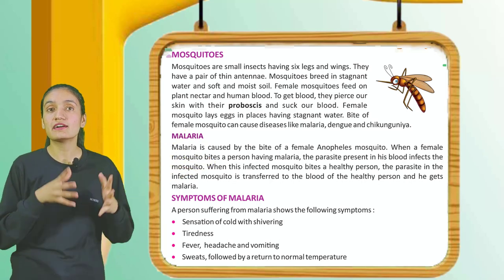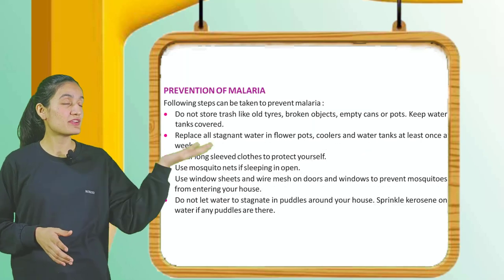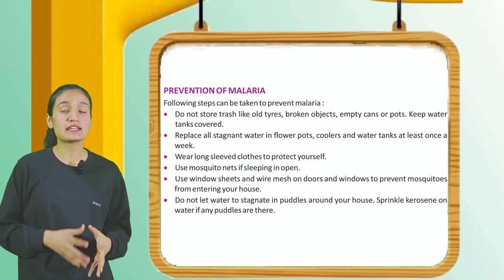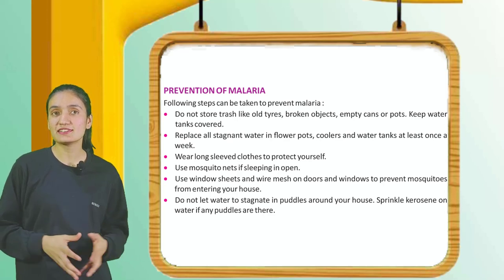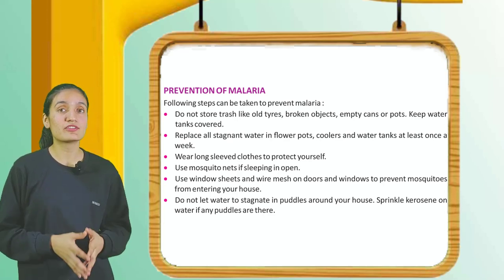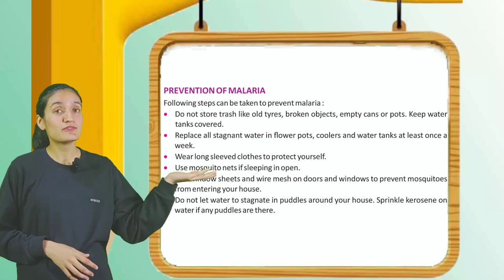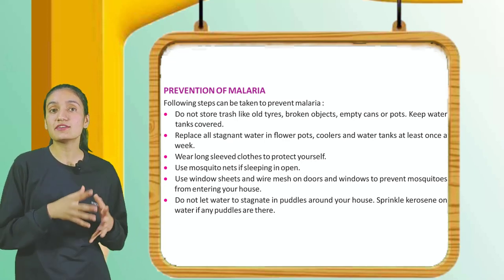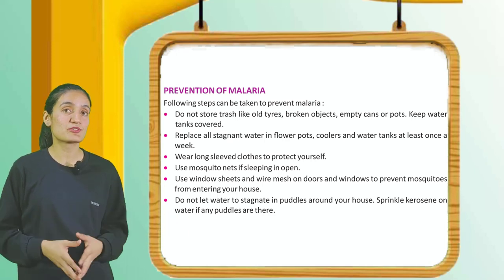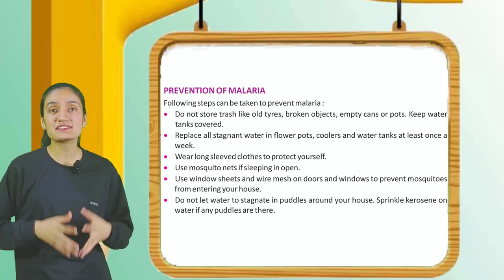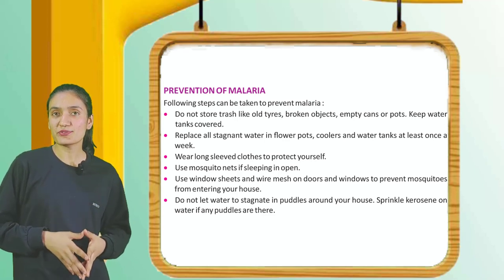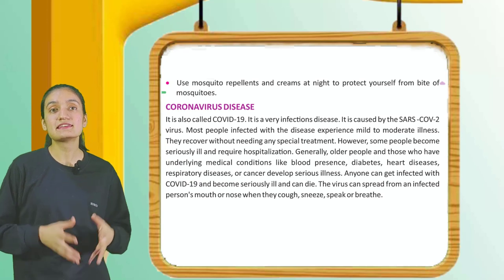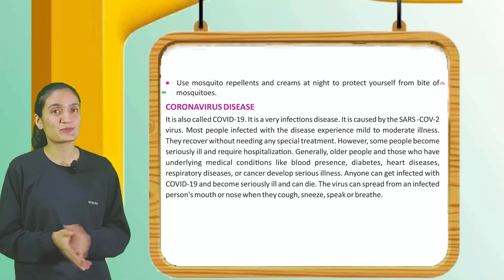Prevention of malaria: Do not store trash like old tires, broken objects, or empty cans. Keep water tanks covered. Replace stagnant water in flower pots, coolers, and water tanks at least once a week. Wear long-sleeved clothes. Use mosquito nets if sleeping in open areas. Use window screens and wire mesh on doors and windows. Do not let water stagnate in puddles around your house. Sprinkle kerosene on puddles if present. Use mosquito repellents and creams at night.